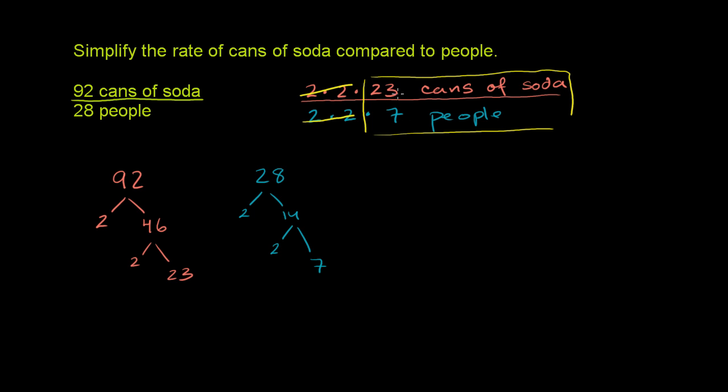or 7 people for every 23 cans of soda. And we're done. We've simplified the rate of cans, or the ratio of cans, of soda compared to people. I guess they're considering this a rate, so maybe they're saying how quickly do 7 people consume cans over some period, or you can view it as a ratio.